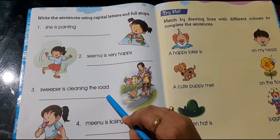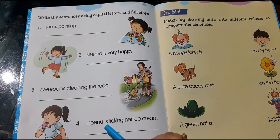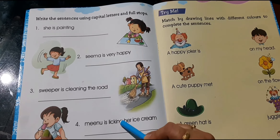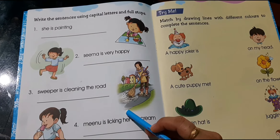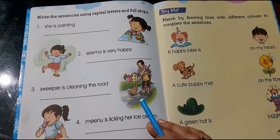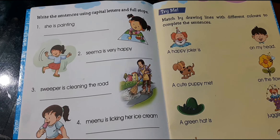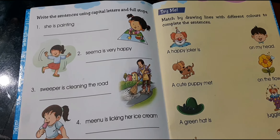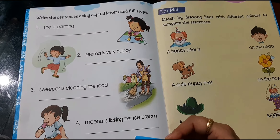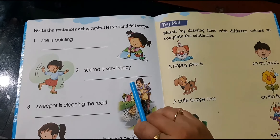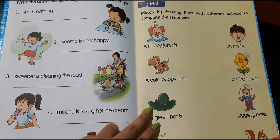Rewrite it once again in the correct way. 'Meenu is licking her ice cream.' Licking means wo ice cream chaat chaat kar kha rahi hai. Next: 'Arjun is swimming.' Again, the first letter capital is missing and the full stop is also missing, so correct it. This will be your class work.